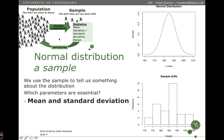Regarding the normal distribution for a sample: we use the sample to tell something about the distribution. What parameters are essential in characterizing this distribution? Well, we know that the normal distribution has a mean and it has a spread, so the mean and the standard deviation are important to be able to characterize this distribution.